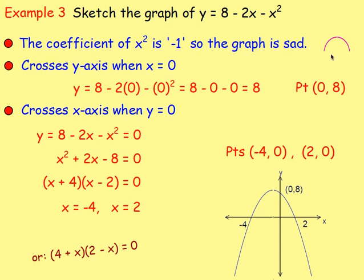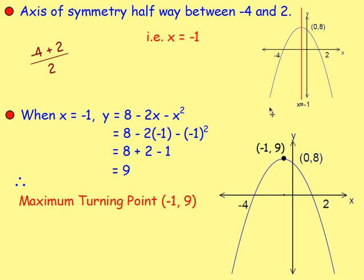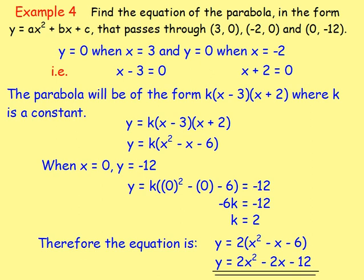If it is harder numbers, just add the two numbers together and halve them — that gives you the axis of symmetry. When x equals three, sub that into the original equation to find y, and that gives you the turning point. In another example, the coefficient of x squared was negative, meaning a sad-face graph. You can find where it crosses the y-axis and x-axis, get the axis of symmetry, and work out the turning point.